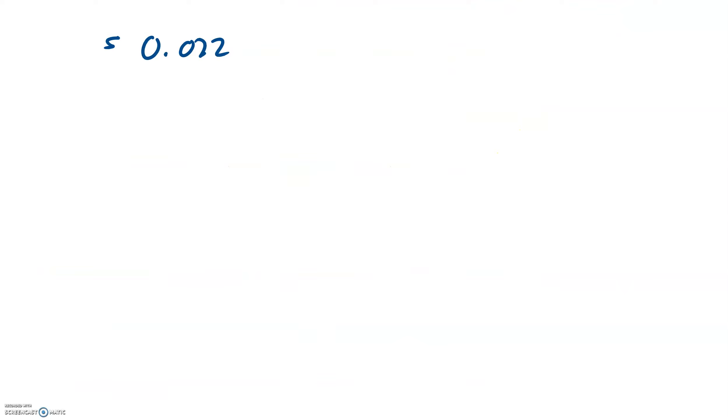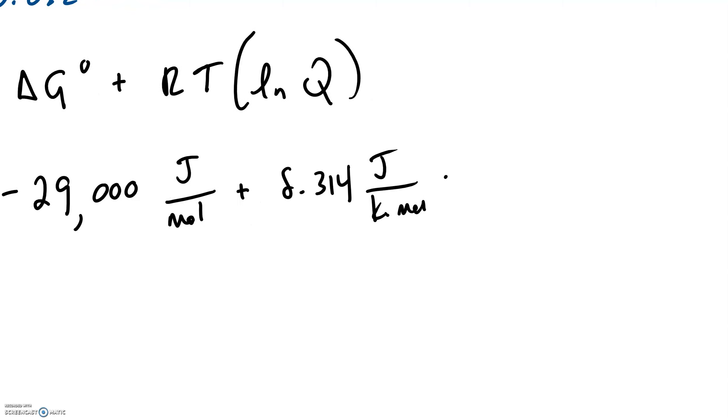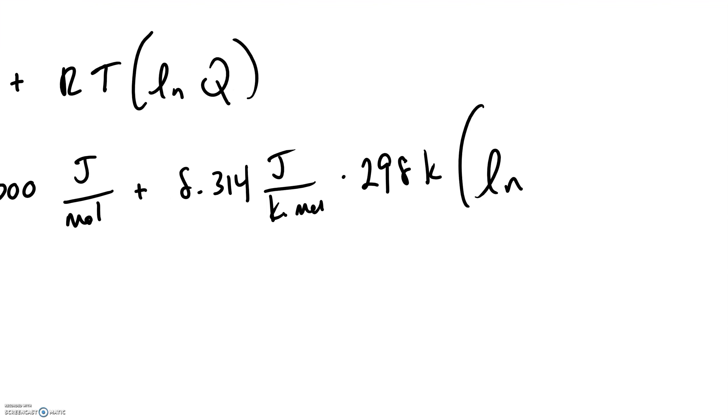I'll rewrite this equation. Delta G under the new conditions is equal to delta G under standard conditions plus RT times the natural log of Q. We just found the original delta G. We said it was negative 29 kilojoules per mole. But to get it to jibe with the units for R, we'll put it in joules. Negative 29,000 joules per mole. R, we said, was 8.314 joules over kelvin mole. Temperature is 25 degrees Celsius, but we're going to put that into kelvins. Then we're going to multiply that by the natural log of Q, which we already found is 0.022.